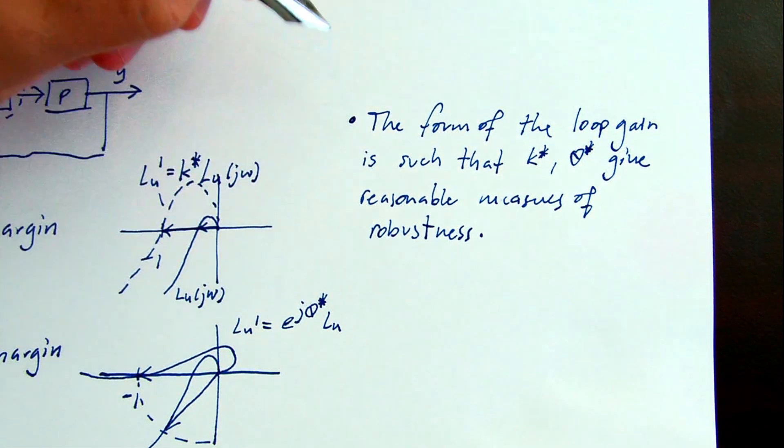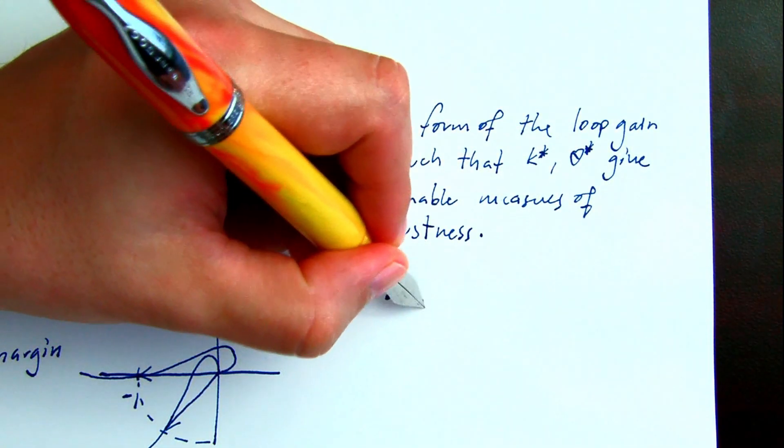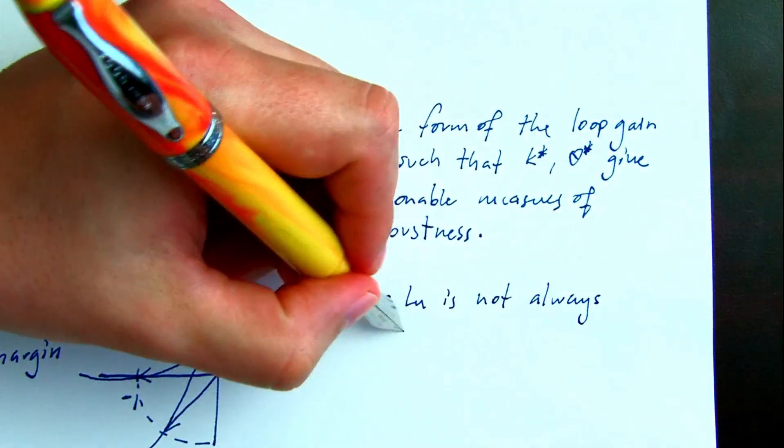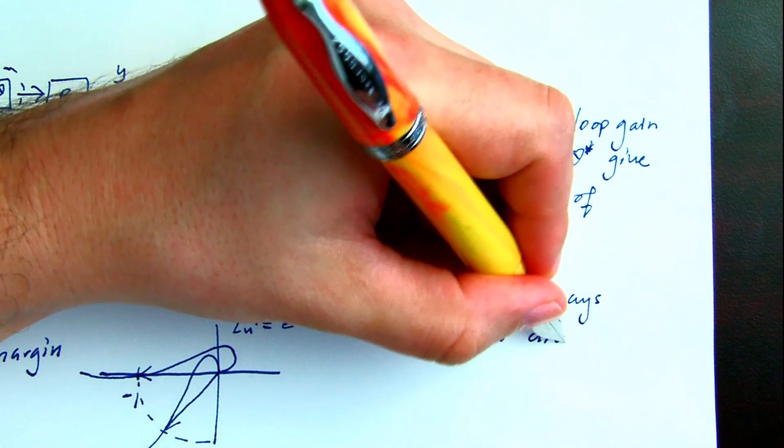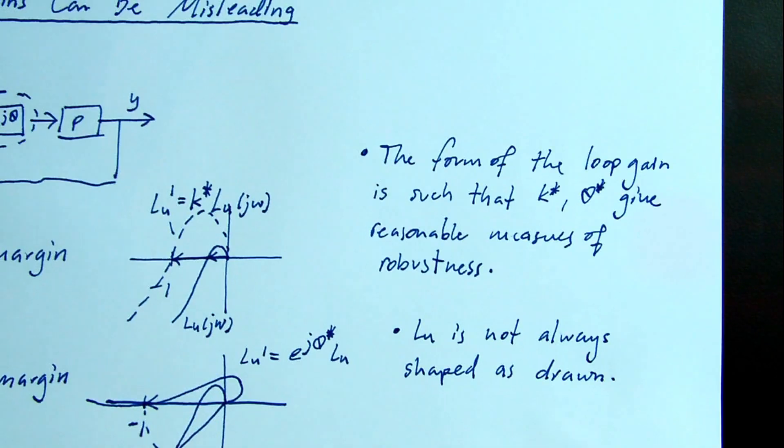That is, they're true to the actual distance of the loop gain away from the critical point. But the loop gain is not always shaped as it's drawn in these examples.